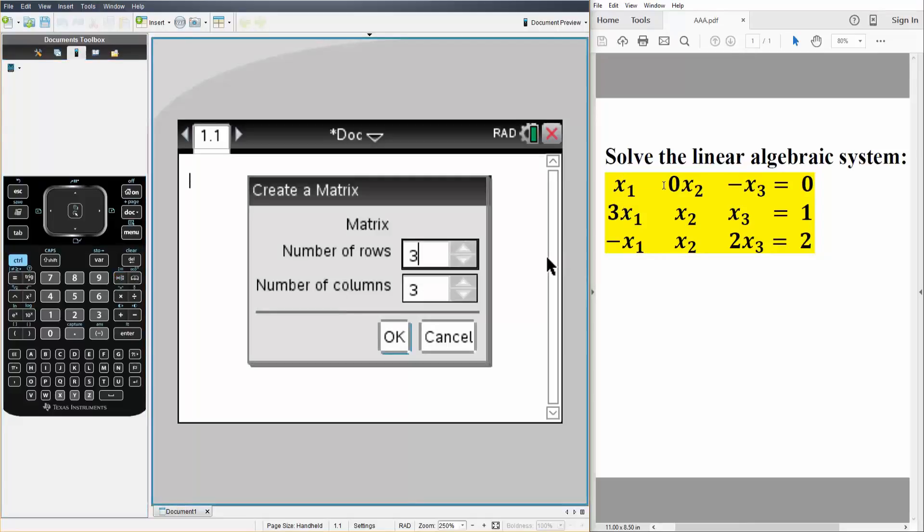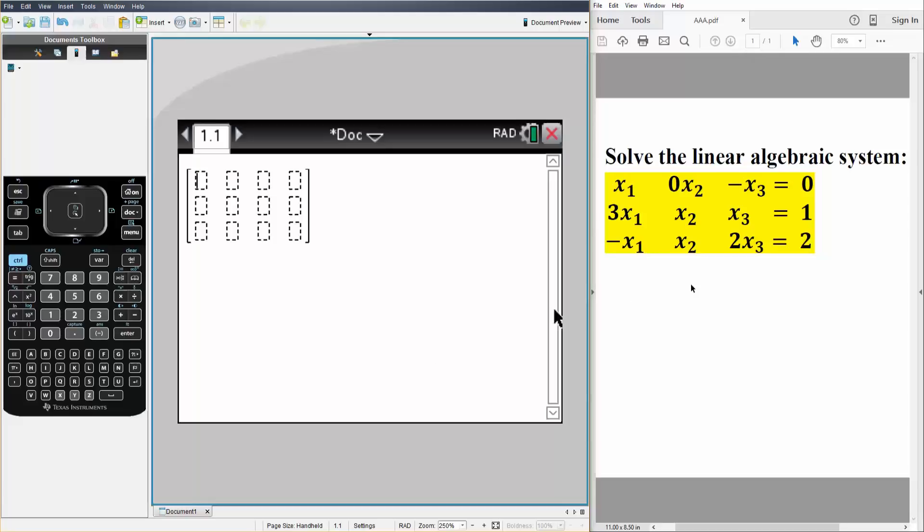If you notice, we have a three by three but we have another column for our answer, so instead we say three by four like this. And now we just write what we have: so we have 1, 0, -1, and...